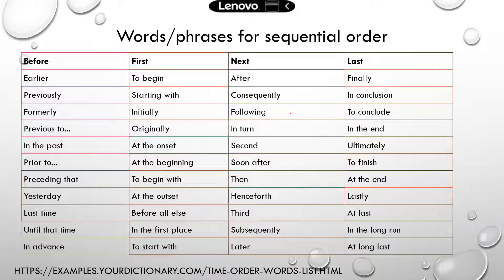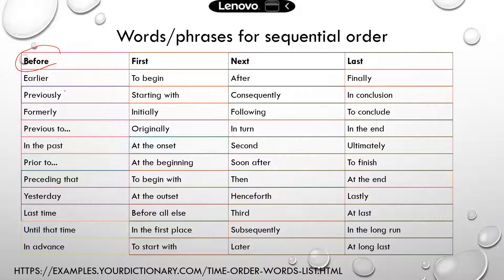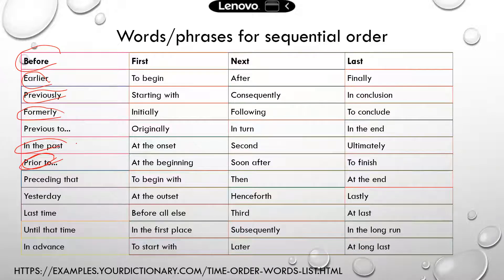I found a very good source that provided a list of the common words or phrases used to indicate sequential order. You can see there's a 'before' category, which includes words like previously, formerly, earlier, or phrases like in the past, prior to, last time.